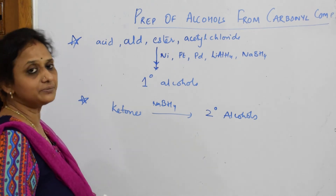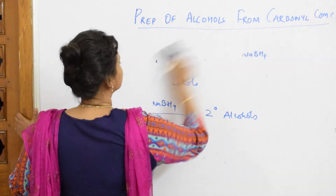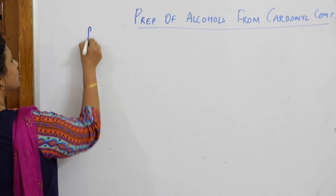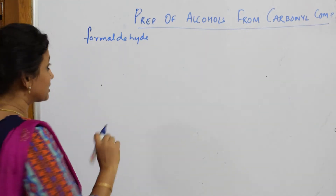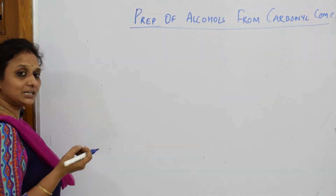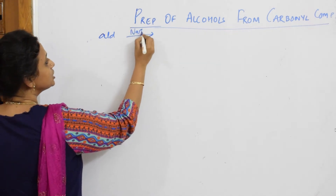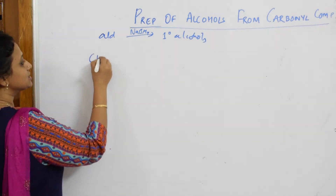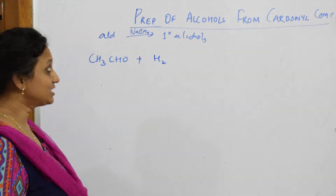Using these clues, let us start preparing alcohols from carbonyl compounds. I'm going to pick up the basic carbonyl compound — let's take formaldehyde. Actually, I'll go with a basic aldehyde first and come back to formaldehyde, as it may confuse you. So, if I pick up an aldehyde, in the presence of reducing agents like sodium borohydride, it has to give me primary alcohols. The aldehyde CH3CHO — I'm going to add hydrogen to this.